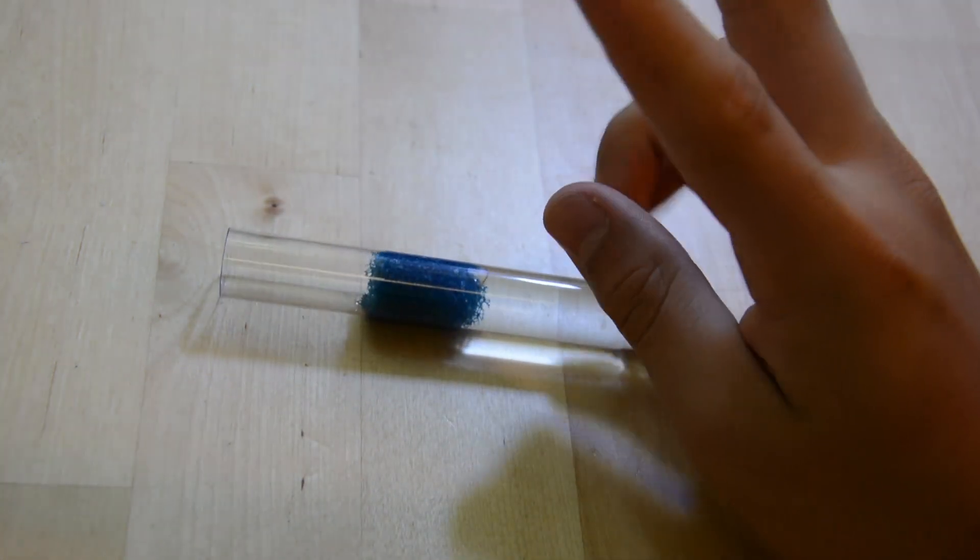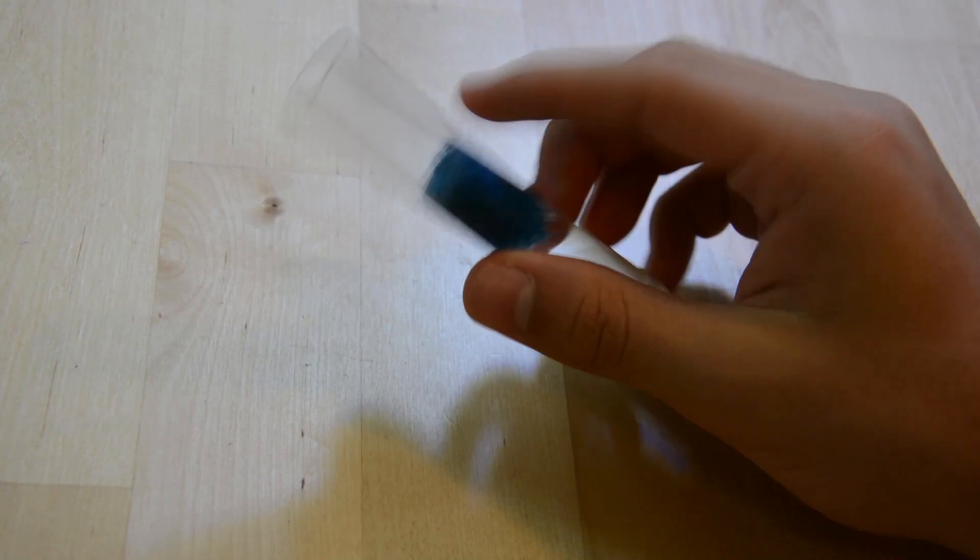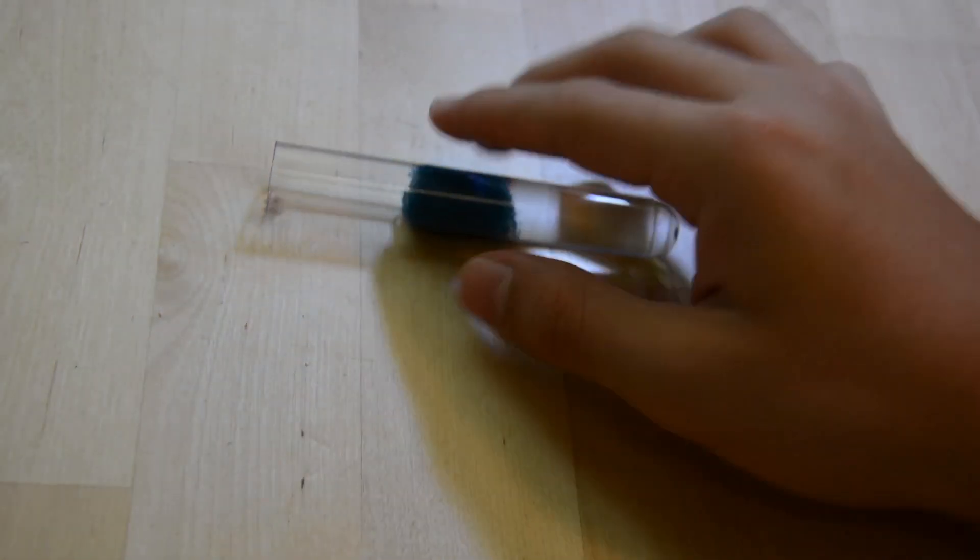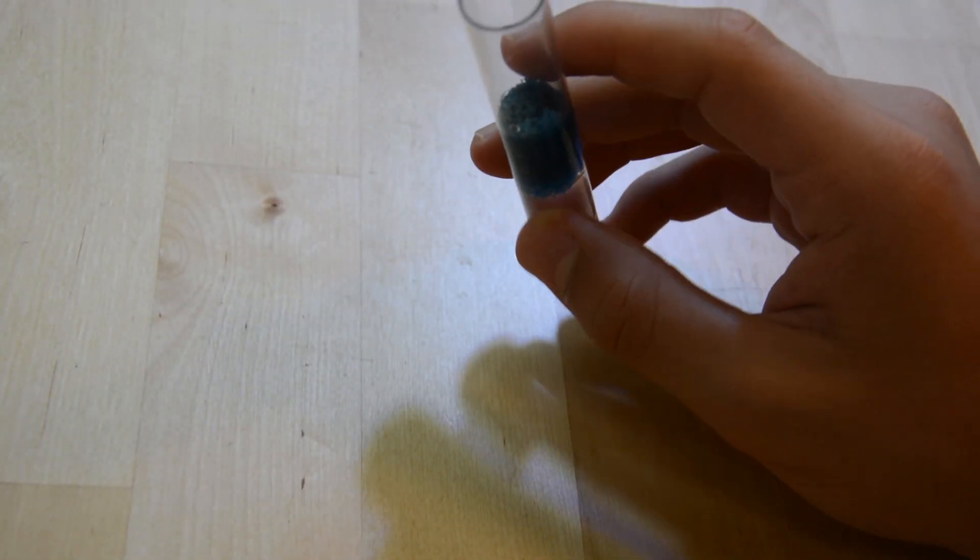The con is that water is able to pass through, but you can prevent this by making the sponge layer thicker. Unless for some odd reason you shake the test tube, your ants shouldn't drown. Experiment with your test tubes and find the perfect size to not leak before you use it for ants.